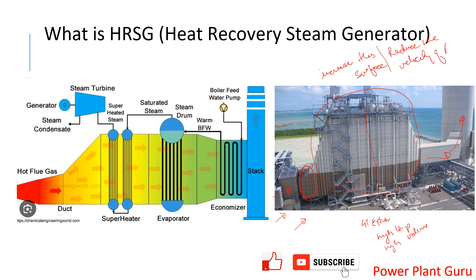Another important feature for high heat transfer is that, unlike auxiliary boiler tubes which are bare tubes, HRSG tubes have fins on the outer tube surface. These fins help capture additional heat and transfer it into the water flowing inside the tubes. This finned tube design is a key characteristic of HRSG heat transfer surfaces.